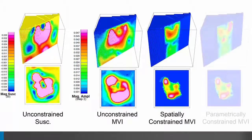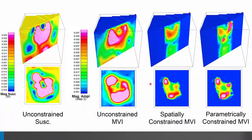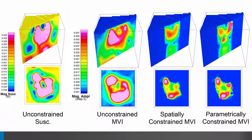Sean and Kit went one step further and used all of the available data, including the borehole susceptibilities, to create a parametrically constrained MVI. The result showed much better surface definition and definition at depth, and they were able to glean additional geological and structural insight from the magnetic field data — which was important to understanding and exploring this kimberlite pipe.